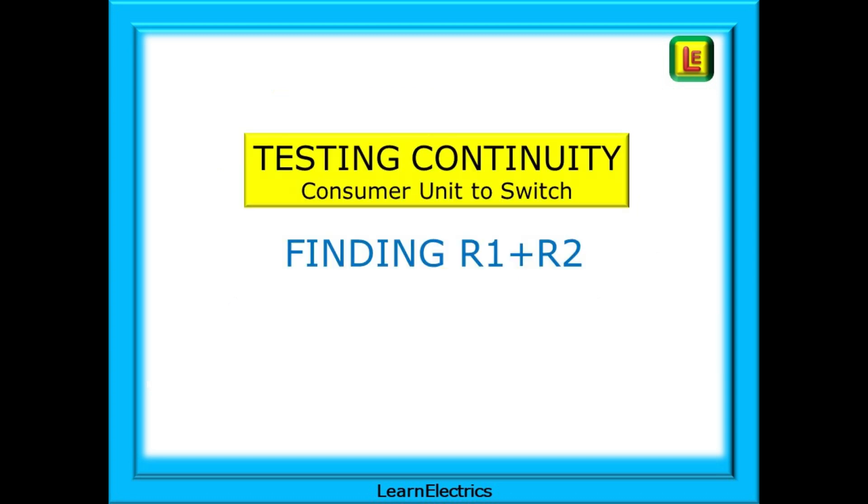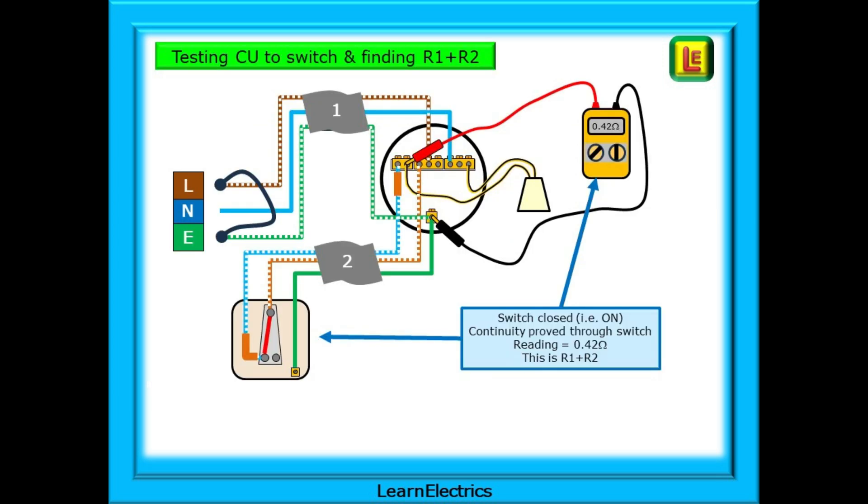Now we can test continuity from the consumer unit to the light switch and we will find R1 plus R2 at the same time. You will need the value of R1 plus R2 for the test certificate. We should leave one test probe on the earth terminal and put the other probe on the switch block, the outside block of two holes.